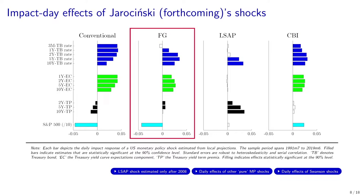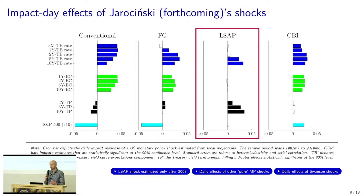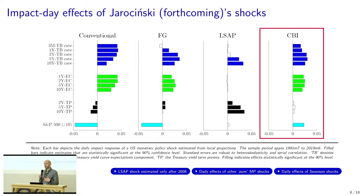The second shock again lifts the treasury yield curve but only at medium to long-term maturities, essentially only through the expectations component, and also leads to contraction in equity prices — this looks pretty much like what a forward guidance shock would do. The third shock lifts the treasury yield curve only at long maturities, only through the term premium and not the expectations component, so this looks pretty much like what an LSAP shock would do. There's no statistically significant response of equity prices here — Giovanni, I think, is going to spend some time on this.